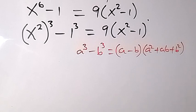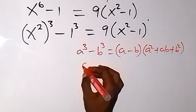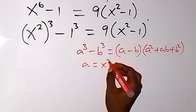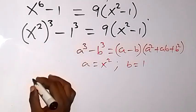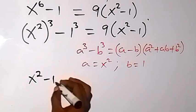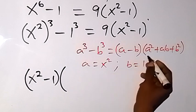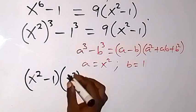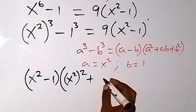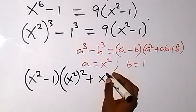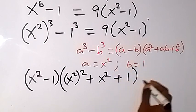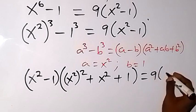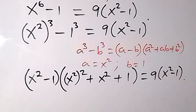So when we apply this here, treating a as x squared and b as 1, we now have this written as x squared minus 1, multiplied by: a squared will be x squared then squared, plus ab that's x squared times 1 which is x squared, then plus b squared that's 1 squared which is 1. This equals 9 times bracket x squared minus 1.